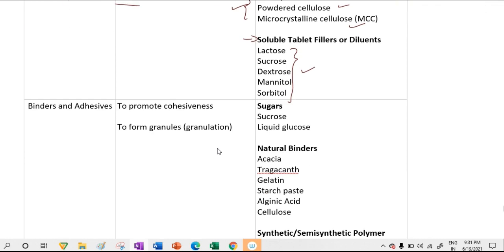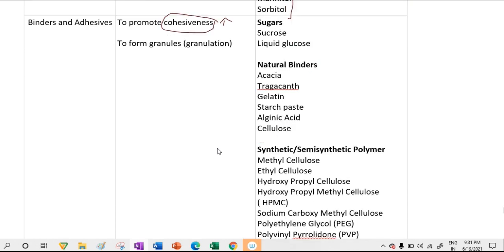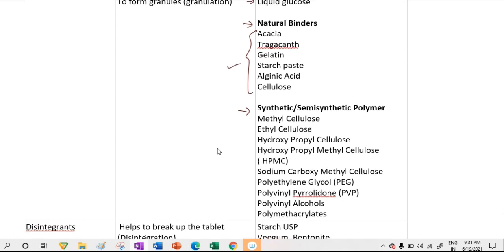Binders and adhesives promote cohesiveness. They are classified as sugar type natural binders, such as sucrose and liquid glucose, and natural binders like acacia, gelatin, starch paste, and cellulose.